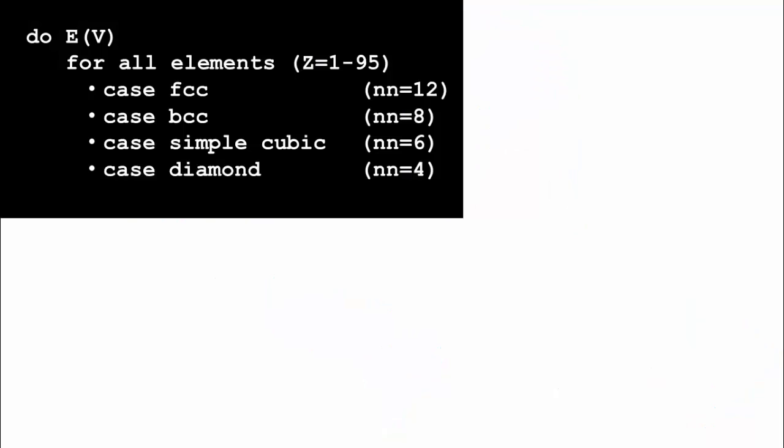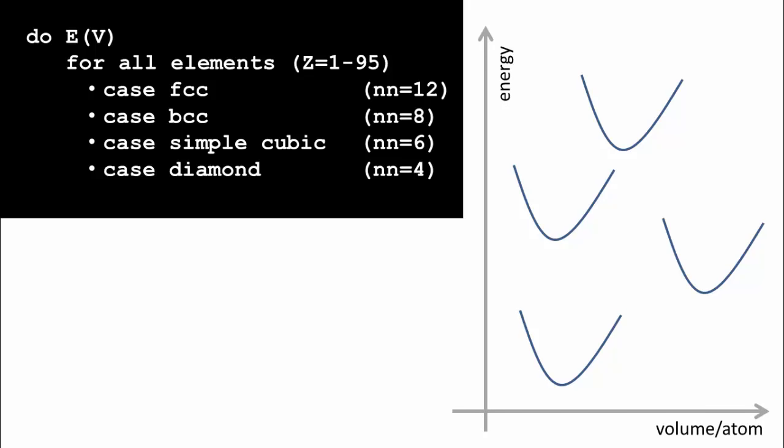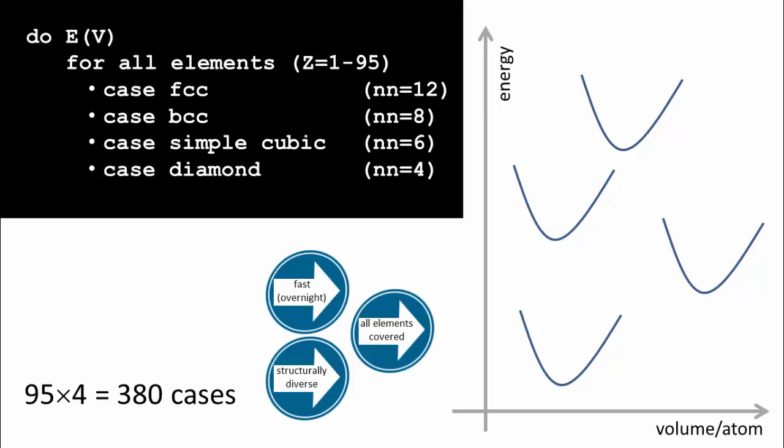Which set did we arrive at? It consists of three parts. The first part: do energy versus volume — and later other properties — for all elements up to americium to cover all present and future needs, placing them in very simple crystal structures: FCC, BCC, simple cubic, and diamond — to scan coordination from highly coordinated to low coordinated. That gives every element a set of four curves on an energy axis, giving access to energy differences between structures. This is fast, covers all elements, and has structural diversity — about 400 cases.